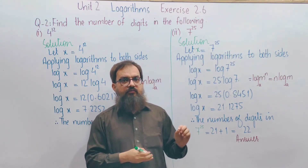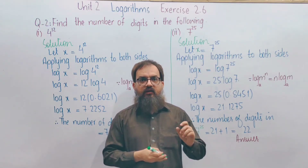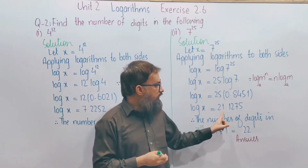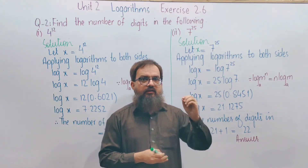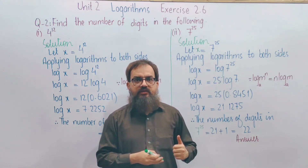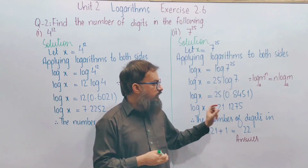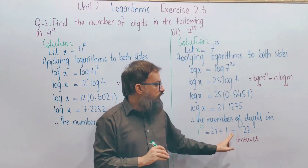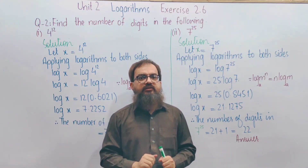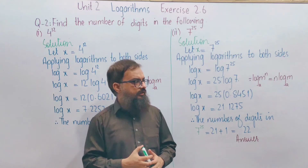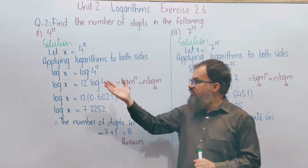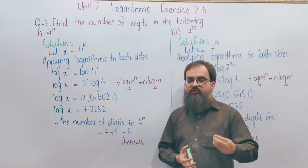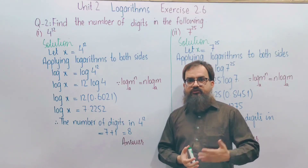So the number of digits in 7 to the power 25 is 21 + 1 = 22. The question was asking: what is the number of digits? That means, when we place the decimal point, how many digits come before it? We count 21 digits after the first digit, plus the first digit itself — so 22 digits. I hope this explanation was clear. You can see that Part 1 was solved with the exact same process.